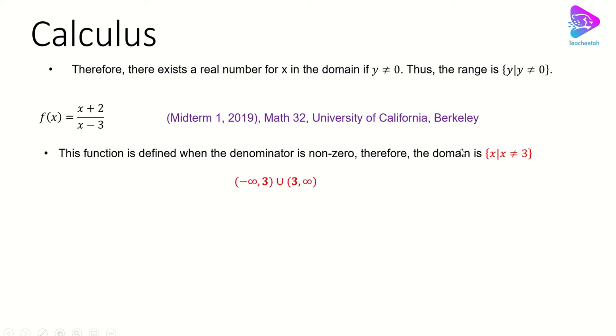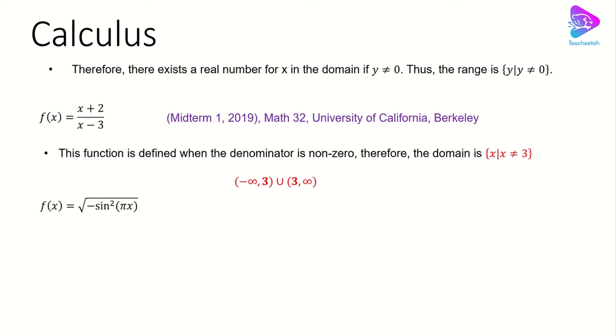And we can write the domain using two different notations, as shown here. Let's look at another example — this one is a little bit more complicated. We have the square root of negative sine squared of πx, and we are looking for the domain of this function.